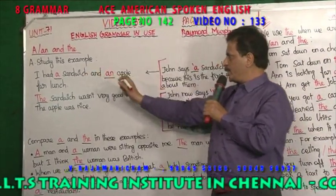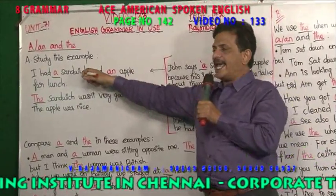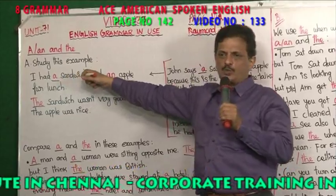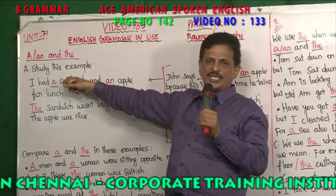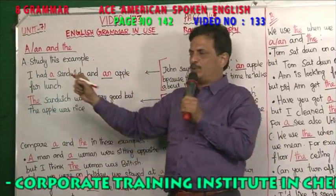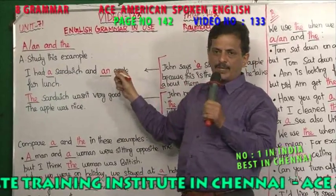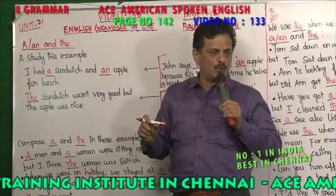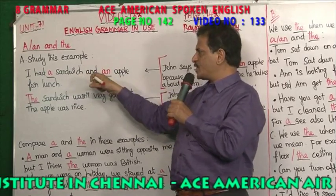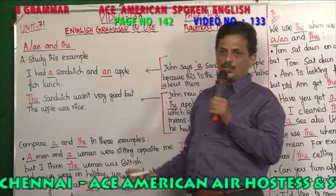I had a sandwich and an apple for lunch. See — 'a sandwich': this noun starts with a consonant and it is one sandwich, so you are using 'a sandwich'. 'Apple': A is a vowel, so you are using 'an apple'. So: I had a sandwich and an apple for lunch.